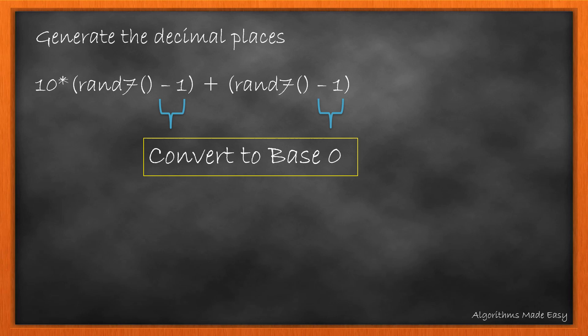The number generated with random7 function is from 1 to 7. So we need to convert it to base 0 by subtracting 1 from it.